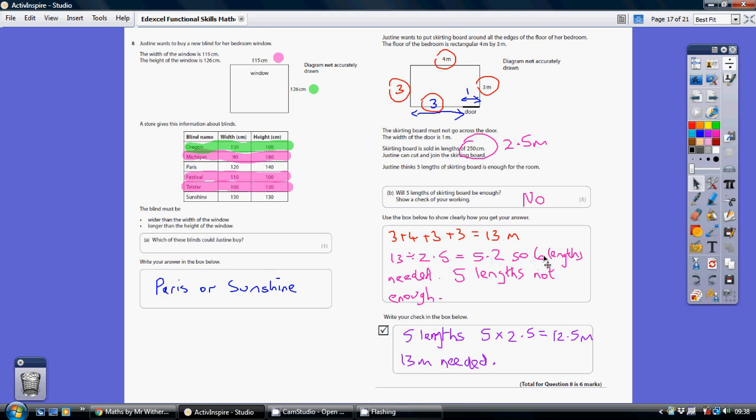That sixth one, I'm only going to use a bit of it, but five lengths is not enough. Have I done my check? I've worked out that five lengths would be five lots of 2.5, which is 12.5 meters. That isn't enough because I need 13 meters.